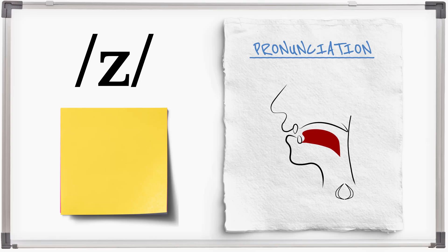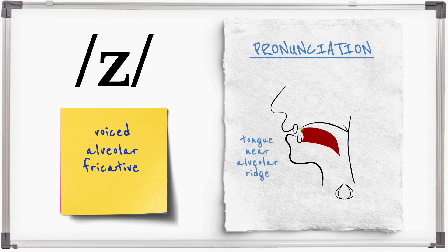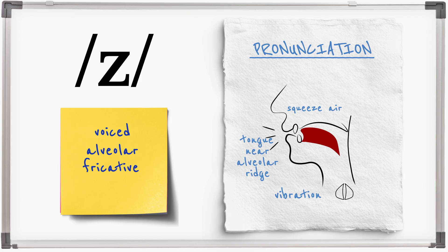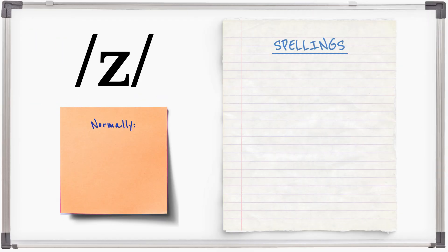Z is a voiced alveolar fricative. It's made by positioning the tongue near to the alveolar ridge and squeezing air past it. The voice box vibrates throughout. Z is normally spelt with z or s.